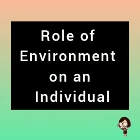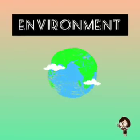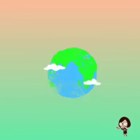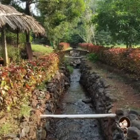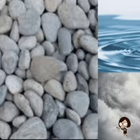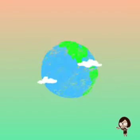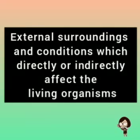Now let's talk about the role of environment on an individual. Environment is nothing but our surroundings — a combination of all the living and non-living things. Environment can also be defined as external surroundings and conditions which directly or indirectly affect the living organism.